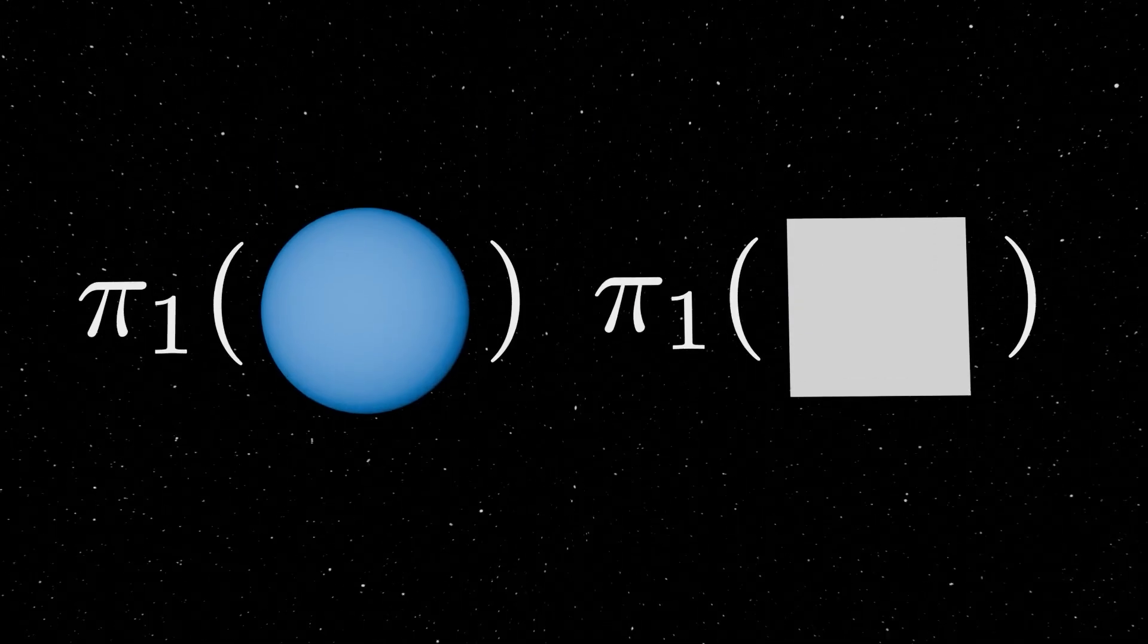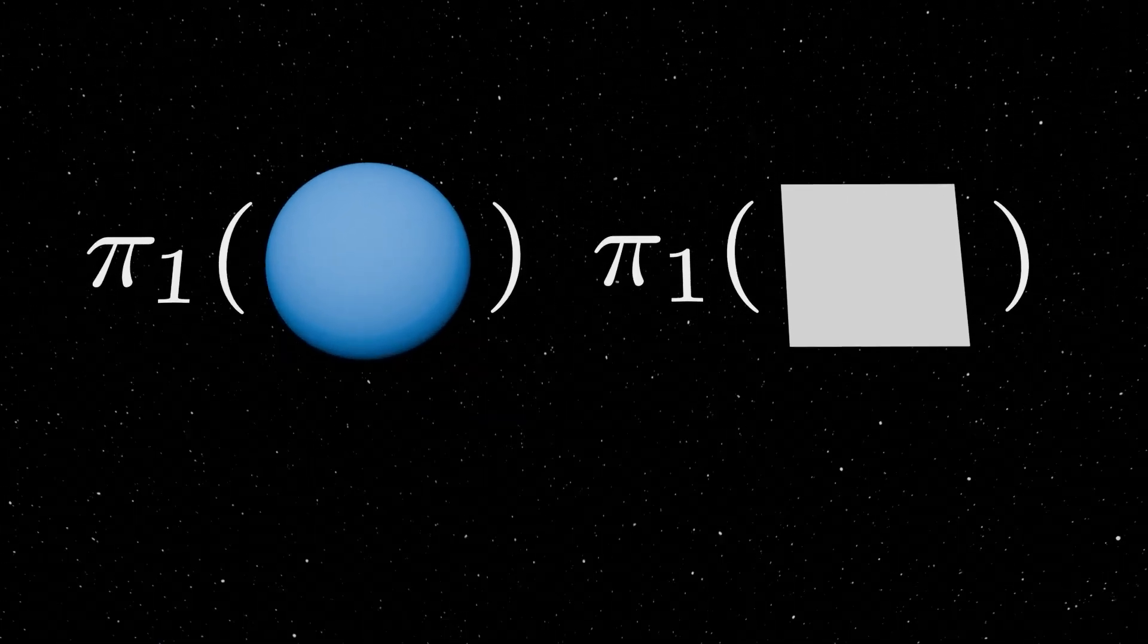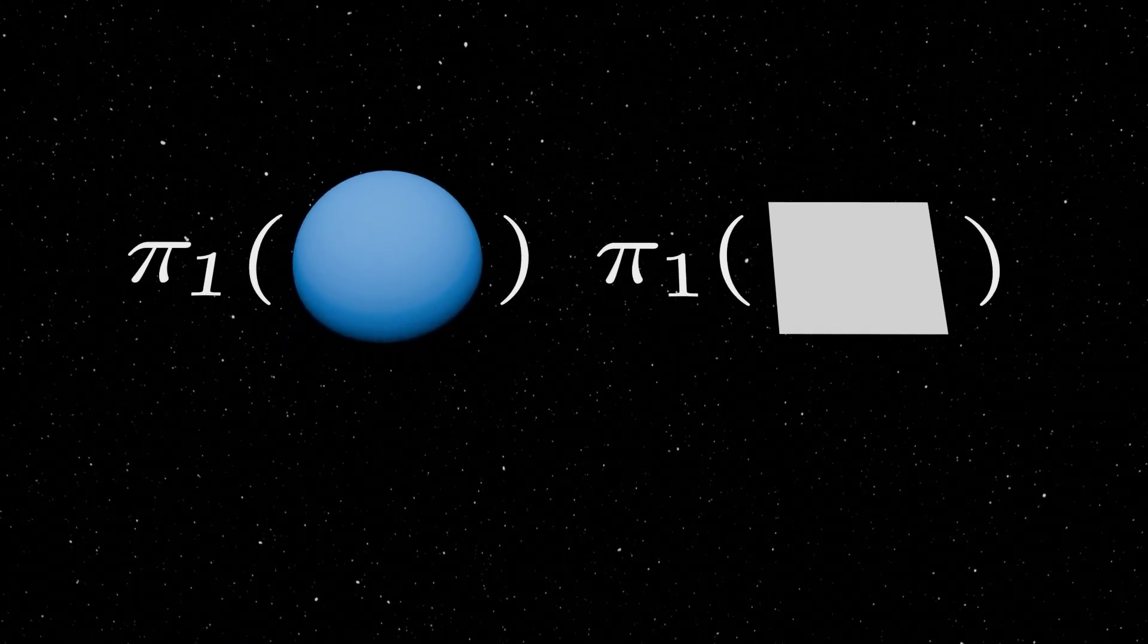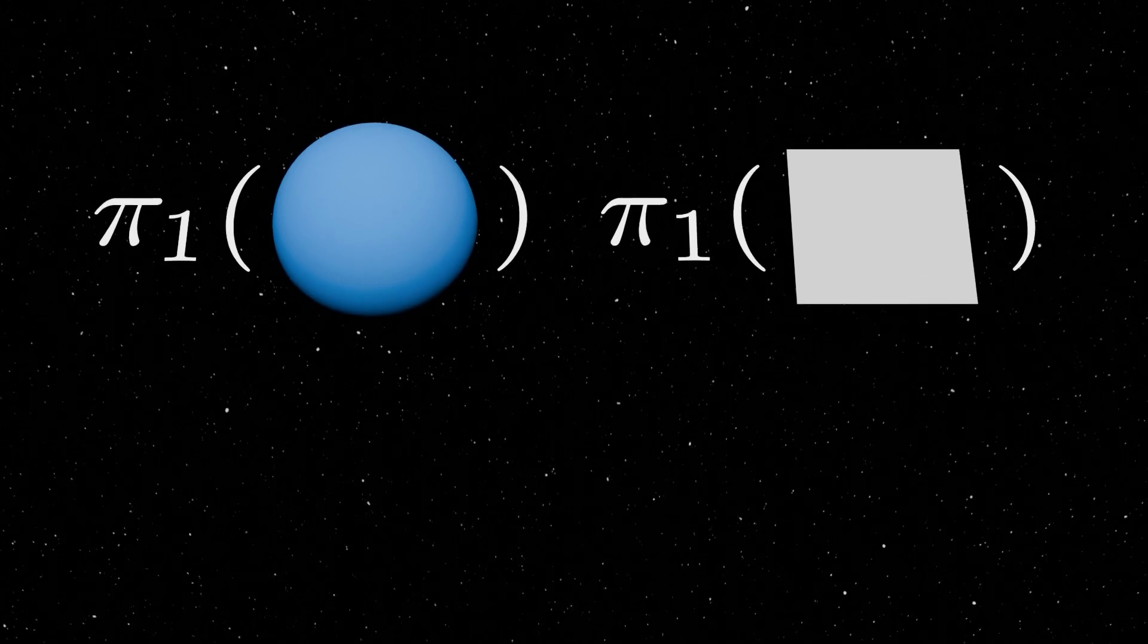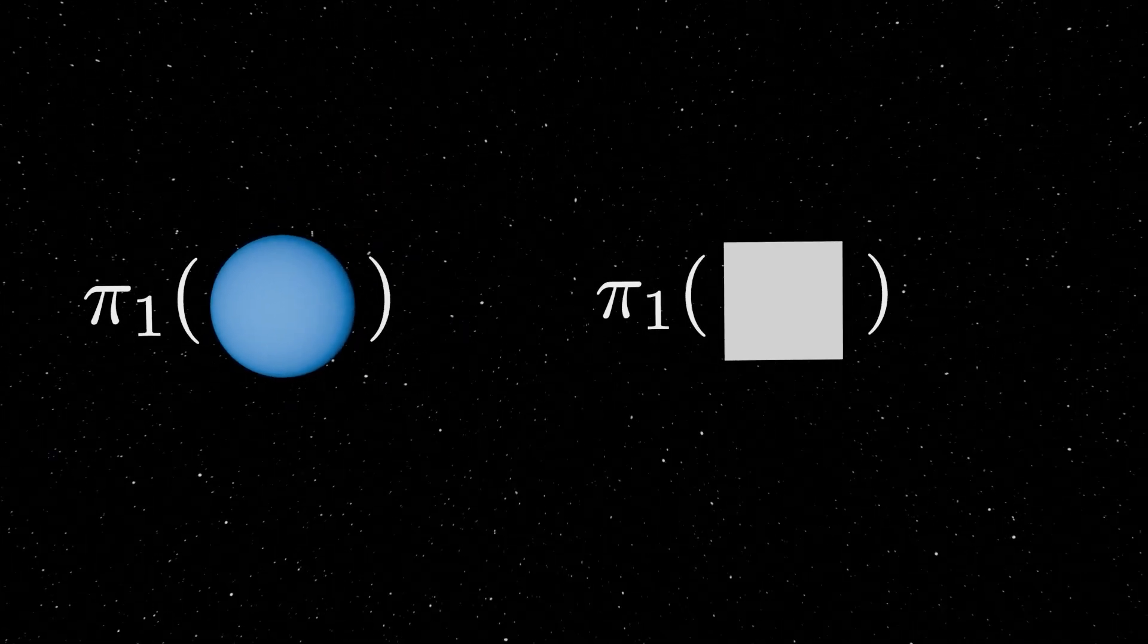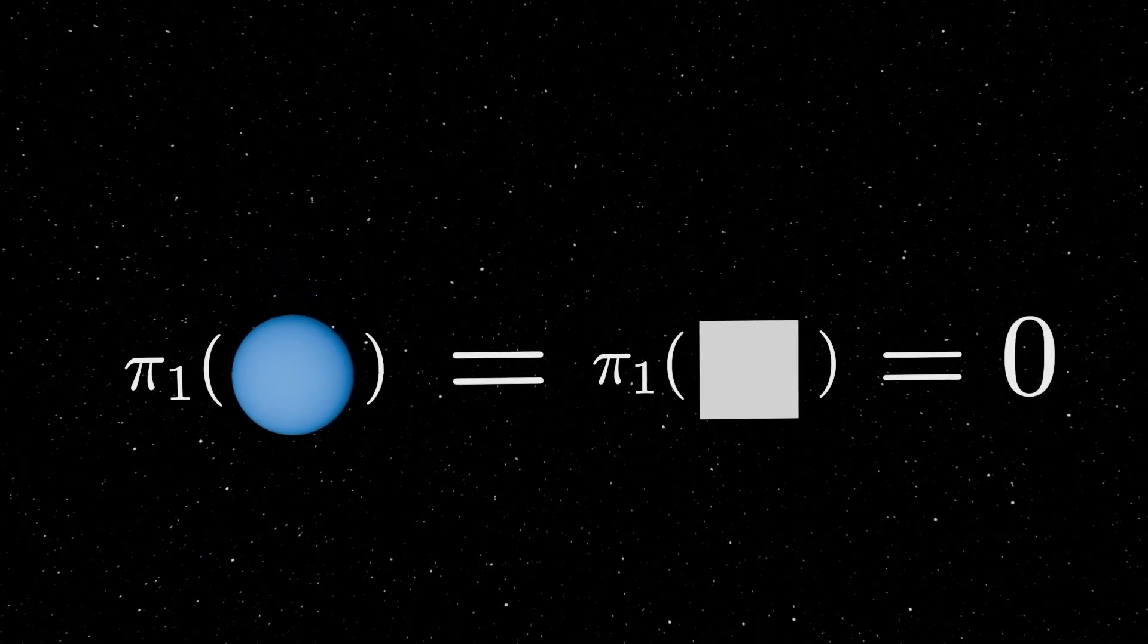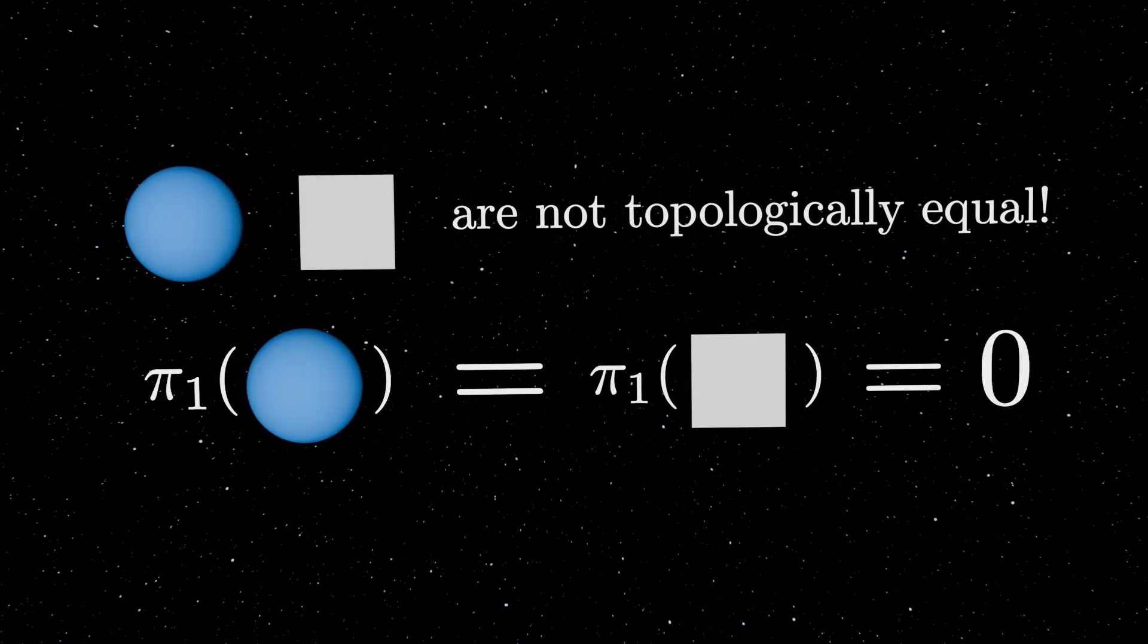However, you might notice that there are some limitations to the power of the fundamental group. For example, the plane and the sphere both have fundamental groups equal to zero, but they can by no means be continuously deformed into each other.